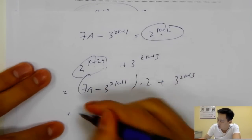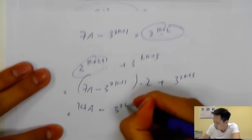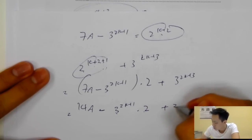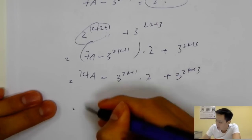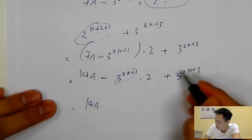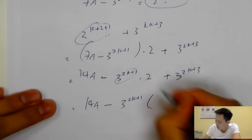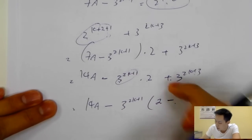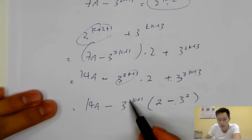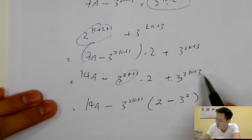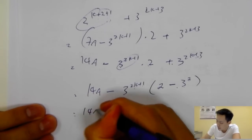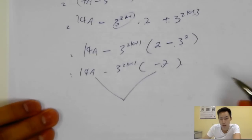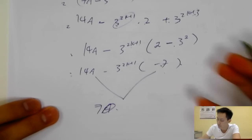We multiply the two in, getting 14A minus 3^(2K+1) times two plus 3^(K+3). Then we take out the common factor of 3^(2K+1). Note: don't multiply the two with the three because there's a power. Taking out the common factor leaves 14A minus 3^(2K+1) times negative seven. So we can factor out seven, which proves divisibility by seven.